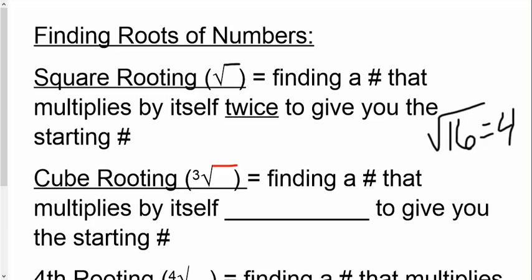Now a square root has an assumed 2 right here. That's definitely a 2. In other types of roots, you're going to have different numbers. So cube root. So if I have a cube root, you're finding a number that multiplies by itself 3 times.